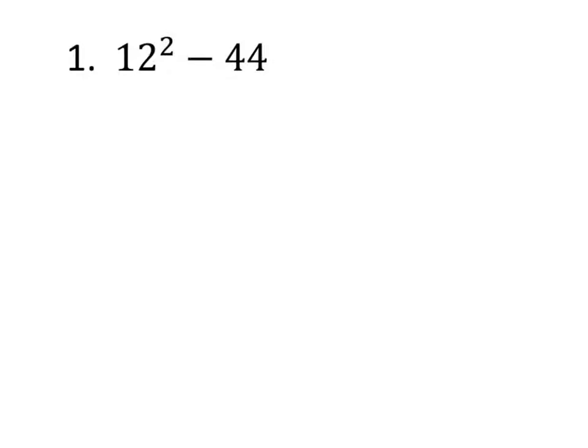All right, so continue with our study there, considering, again, order of operations, right? No parentheses, again, no grouping symbols, so we go straight to exponents. 12 squared means 12 times 12, which is 144 minus 44. We're going to bring that part down, which gives us a nice cool 100.